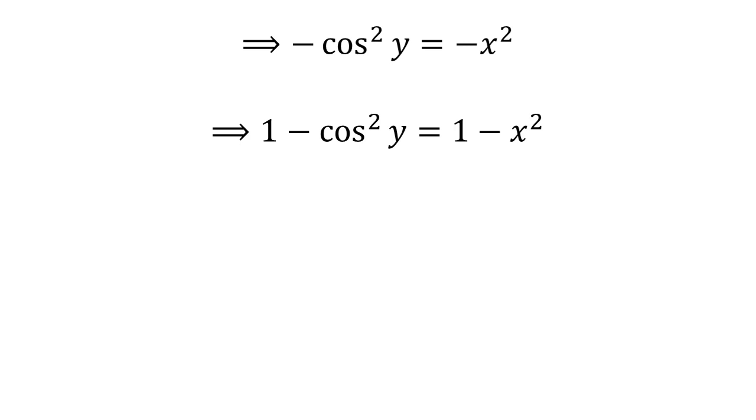Similarly, adding 1 to both sides gives us 1 minus square of cosine of y is equal to 1 minus square of x.